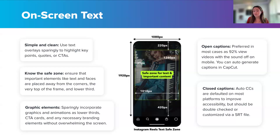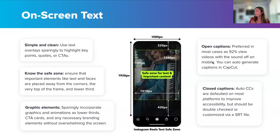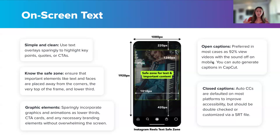If you're interested in generating open captions, you can use platforms like CapCut to auto-generate them for you. You can also use ChatGPT to help get those auto-captions generated — that way you're not manually typing everything.